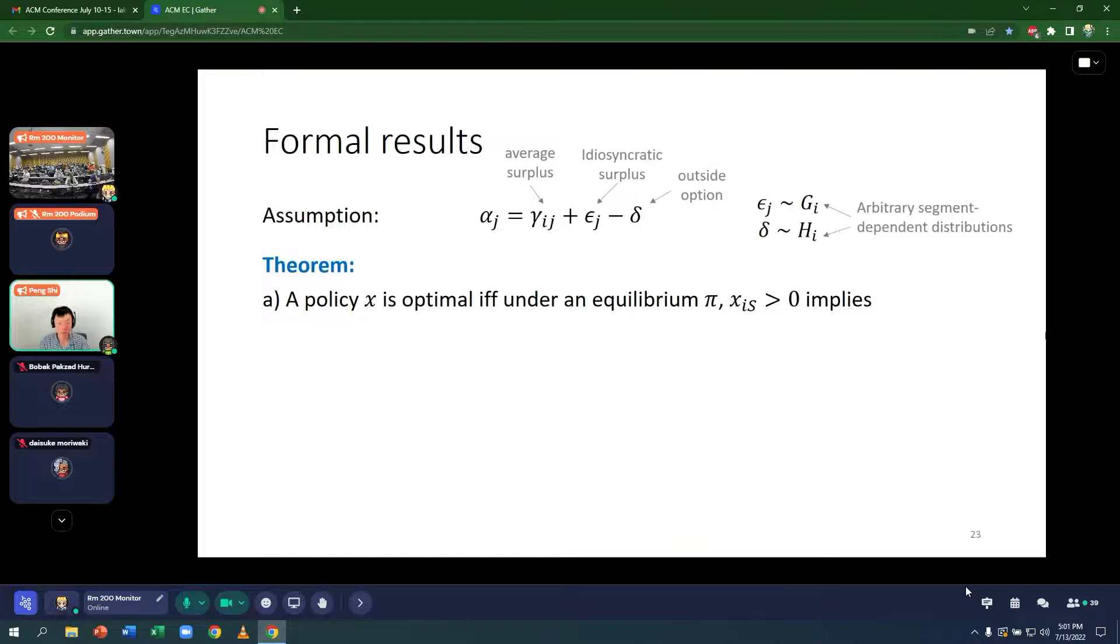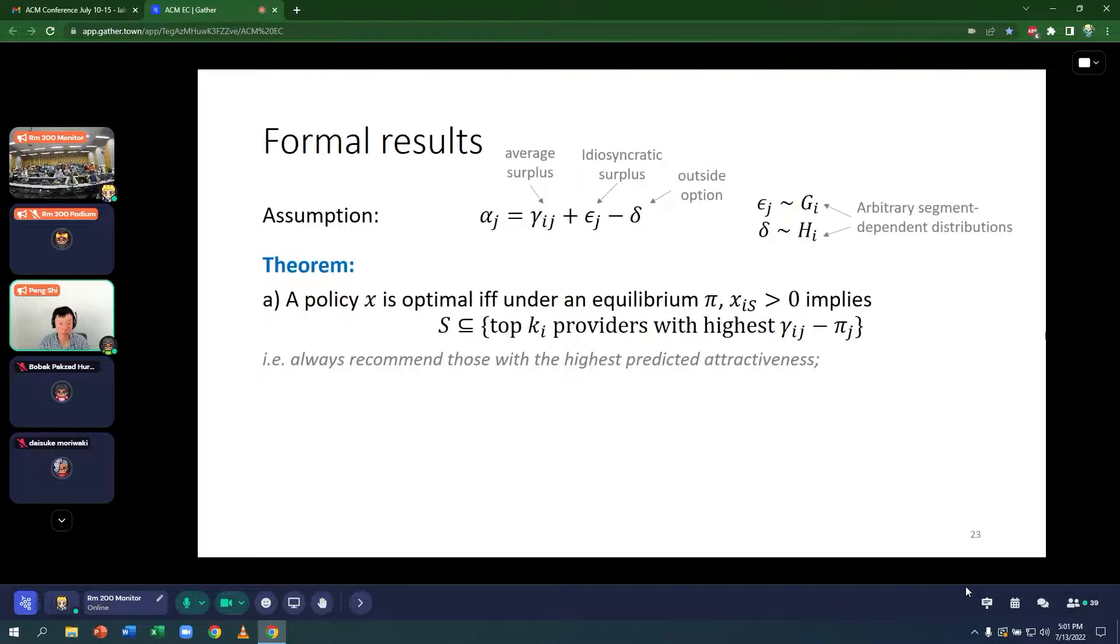And under these assumptions, a policy X is optimal if and only if under an equilibrium profit vector, a set is recommended with positive probability means that those providers are among the top K with the highest gamma_ij minus pi_j. So gamma_ij is the average surplus, the average attractiveness of this provider with this customer. And pi_j accounts for the provider's prices. So you can interpret this as always recommending those with the highest predicted attractiveness, accounting for their average attractiveness and accounting also for how expensive they are.